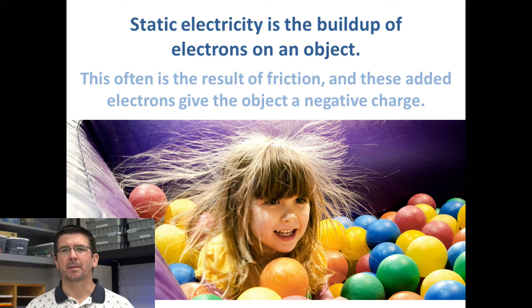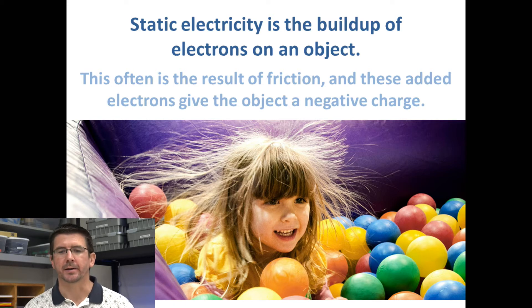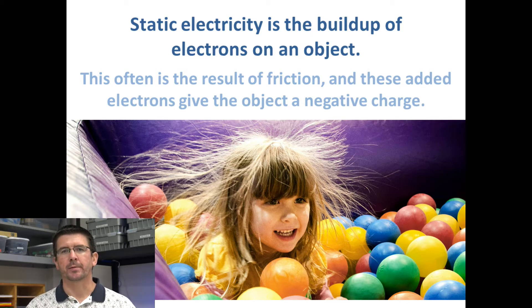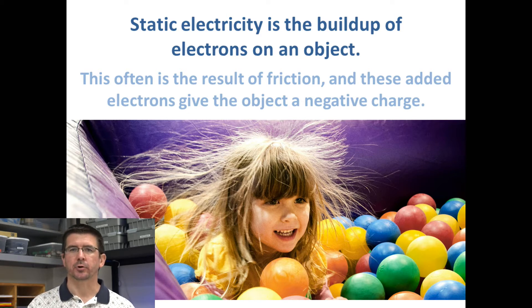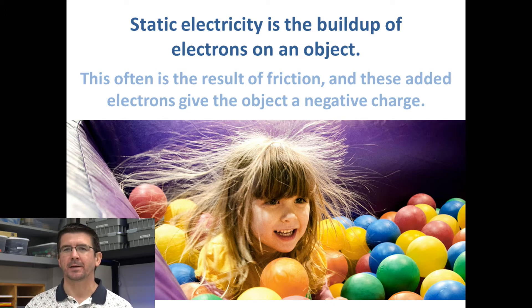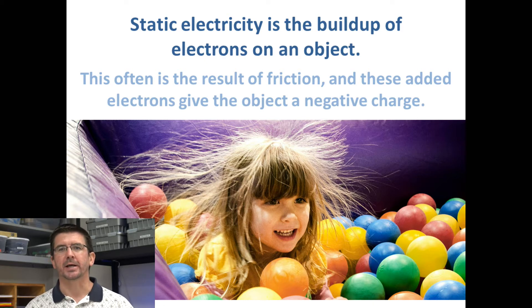Instead of being caused by moving and flowing electrons like electrical current, static electricity is the buildup of electrons that creates an electric charge on an object or in a substance. Very often a static charge is the result of friction. As certain materials rub together they create friction, and in this process electrons move from one object onto the other. Because electrons have a negative charge, if an object gains extra electrons, it takes on a negative charge — a static charge.